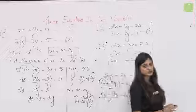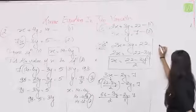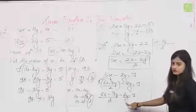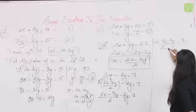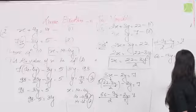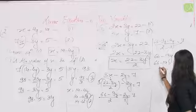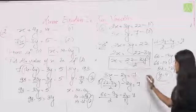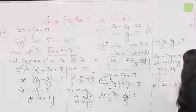LCM 2 लेने पर: 66 − 9y − 4y = 14, so 66 − 13y = 14, so 13y = 66 − 14 = 52, so y = 4। अब x = (22 − 3·4)/2 = (22 − 12)/2 = 10/2 = 5। तो x = 5 और y = 4।